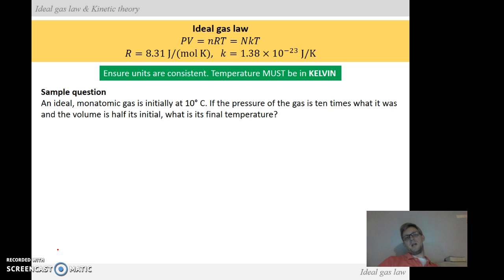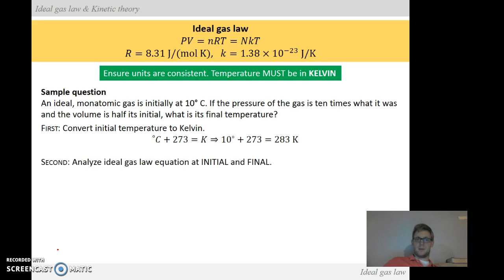So here's a sample question. We have an ideal monoatomic gas that is initially at 10 degrees Celsius. If the pressure of the gas is 10 times what it was and the volume is half its initial, what is its final temperature? So this is a very typical question that we see with the ideal gas law, where we compare initial things with final things. So here's how we set this all up. So first thing that we need to do is make sure that our units are consistent. We're going to convert the initial temperature into Kelvin. So we can do that with simply adding 273 degrees. So we get 283 Kelvin for our temperature.